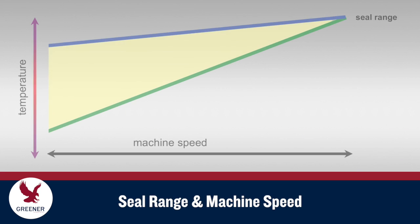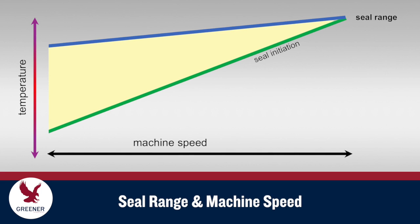The effective seal range narrows as machine speed increases and seal dwell time is reduced. When heat reaching the sealant layer fails to attain seal initiation temperature, compensating temperature increases are limited by the distortion temperature of the core material layers.